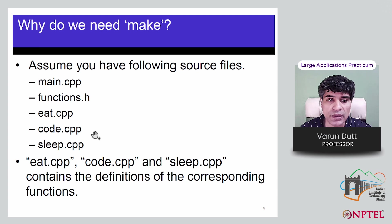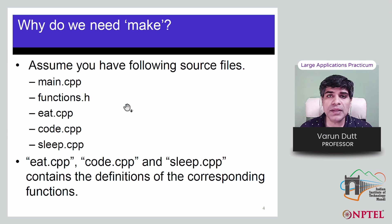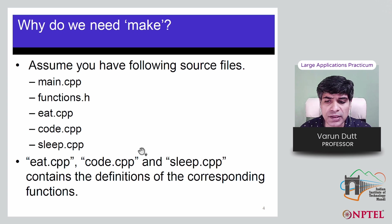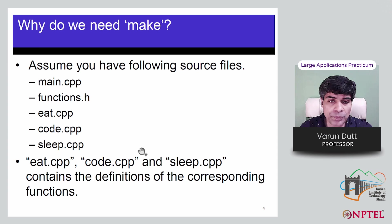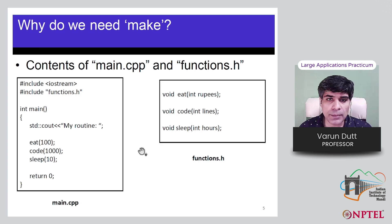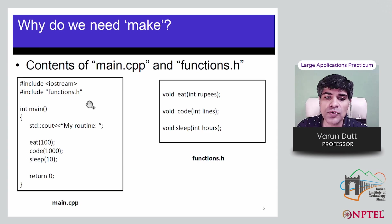Assume you have a project with the following files: main.cpp, function.h, eat.cpp, code.cpp, and sleep.cpp. The .cpp extension is for C++ files, and eat, code, and sleep contain definitions of their corresponding functions.